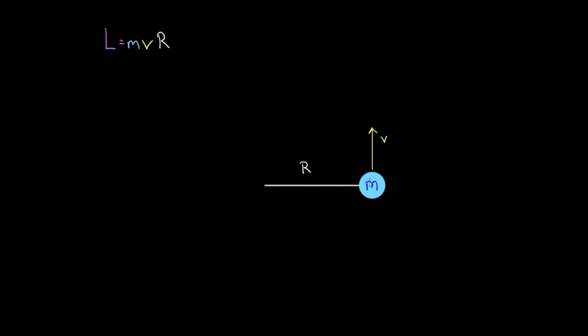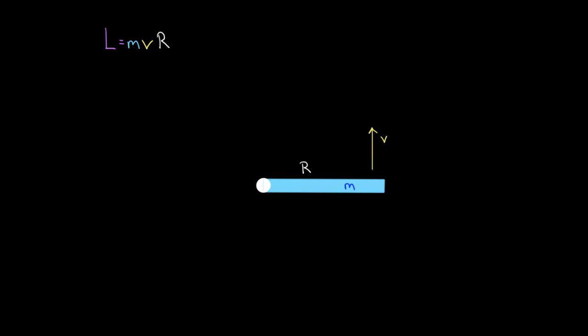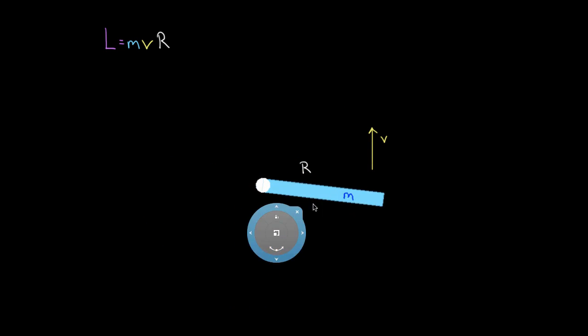But sometimes you don't have a ball going in a circle and you still want to know the angular momentum. For instance, instead of a point mass, consider a rod of mass M and length R that rotates around an axis, where the outside edge travels at speed V — just like the ball did. Will this rod also have angular momentum equal to MVR? It won't.